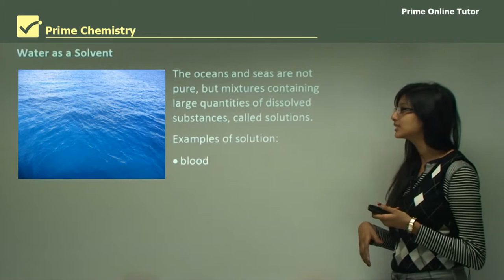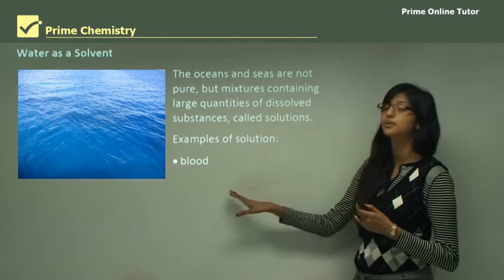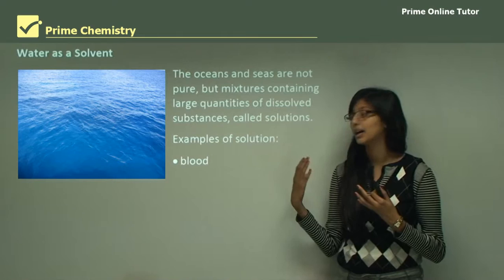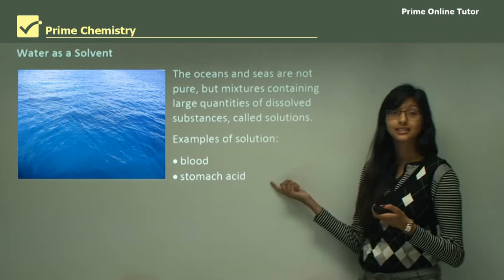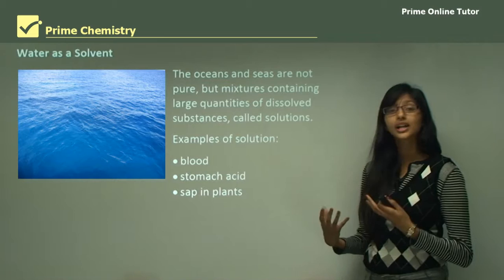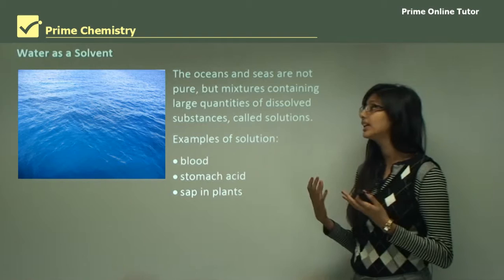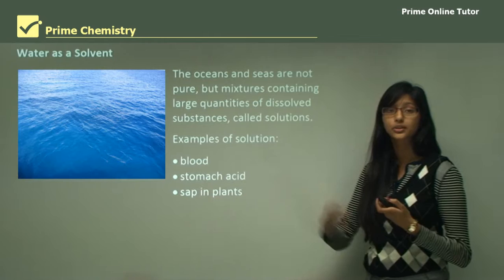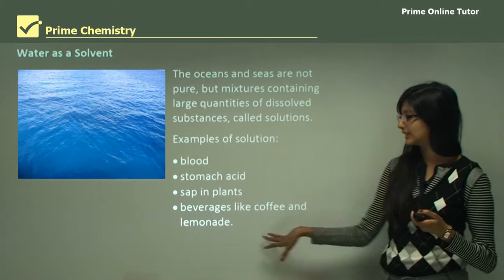Let's look at more examples of solutions where water plays a major role. For example, blood — the content of blood plasma is 90% water. Stomach acid also contains water. Sap in plants is water, and glucose that the plant produces by photosynthesis is carried around the plant using the sap. So glucose is dissolved in the sap. Also beverages like coffee and lemonade.